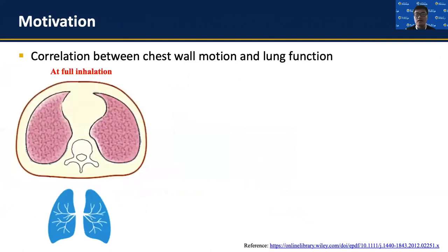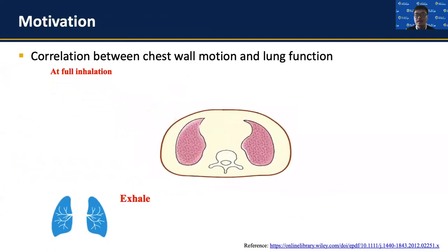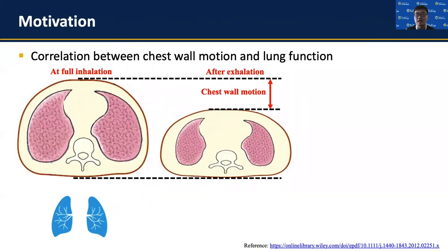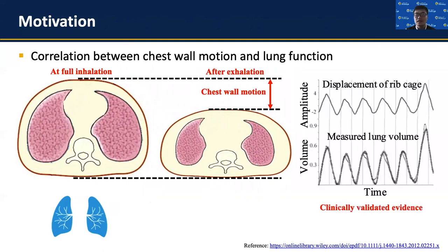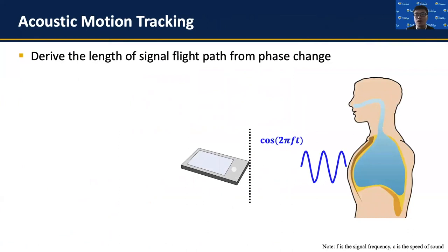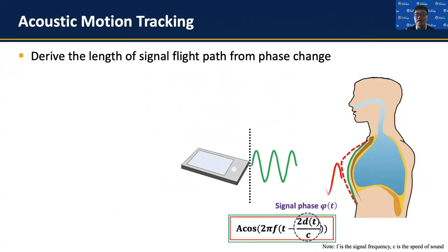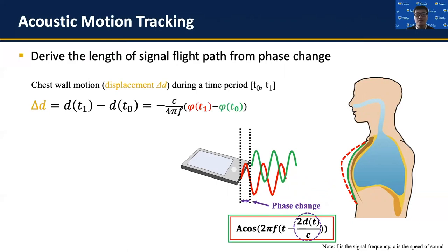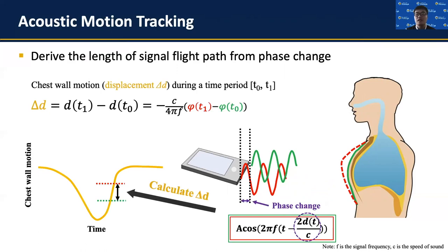The motivation of our design is a correlation between chest wall motion and lung function. When the human exhales, the lung size shrinks, and this change in lung size leads to a displacement on the chest wall which can be externally observed. This correlation is also clinically validated by existing studies. To track such chest wall motion, Spirasonic computes the phase change when the transmitted ultrasound signal reflects from the chest wall and is received by the microphone. The phase change is directly related to the chest wall displacement, so during any time period in a spirometry test, the chest wall motion can be derived from the corresponding signal phase change.